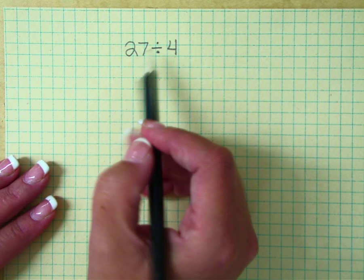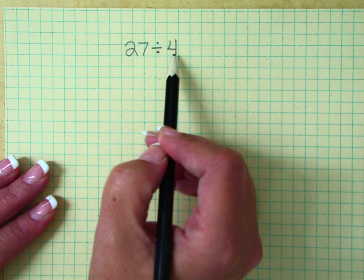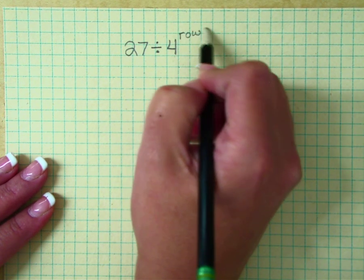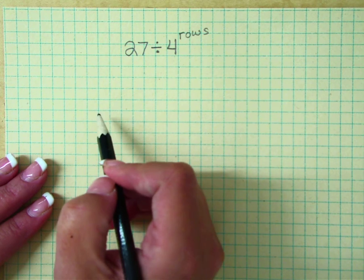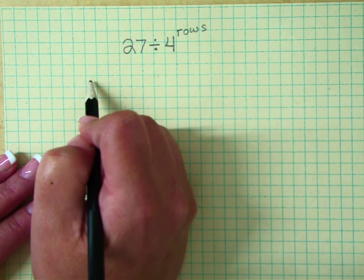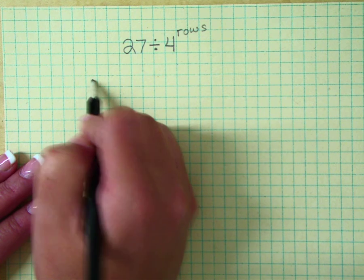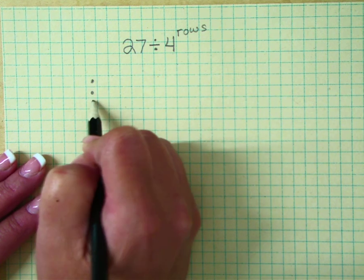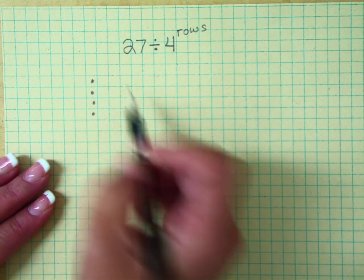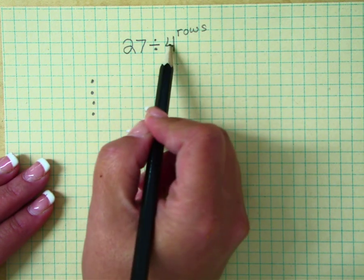When we're building arrays, the divisor is the number of rows that we need to build. So we'll use our graph paper and we're going to have one row, two rows, three, and four. So we have four rows.